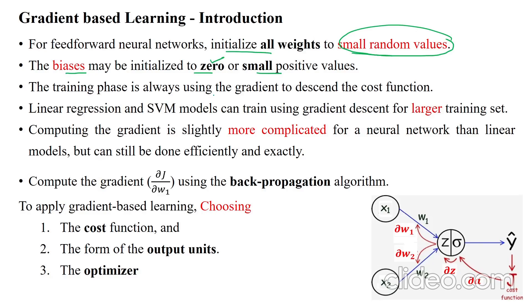The training phase always uses the gradient descent to reduce the value of the cost using the cost function. Linear regression and SVM models can be trained using gradient descent for larger training sets.